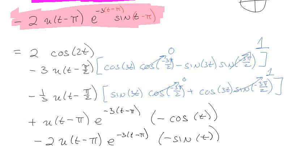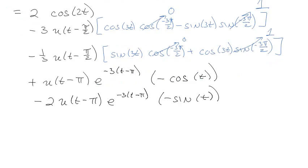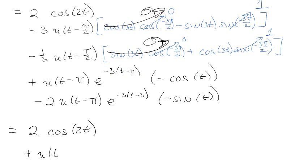All right, so, I'm super-duper close to making this the most beautiful problem that ever worked in the history of this video. So, 2 cos(2t). All right, and then, so this is going to 0. And this is going to 0, okay. So, plus u(t - π/2). And then, minus 3. Minus and minus is a plus 3 sin(3t). Minus 1/3 cos(3t).